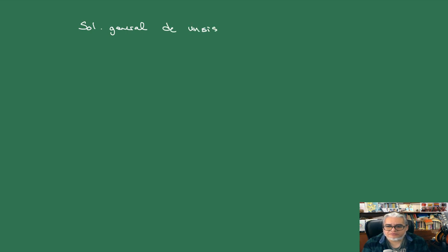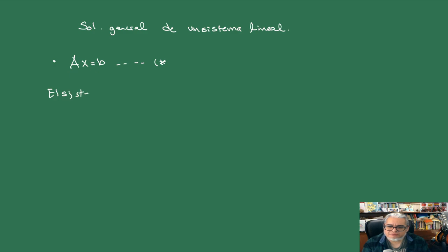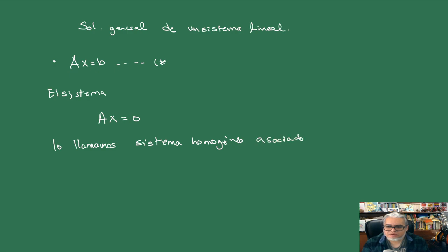Vamos a ver primero la solución general de un sistema lineal. Vamos a partir de que queremos analizar el sistema este, vamos a llamarle estrellita. El sistema homogéneo asociado a estrellita lo llamamos sistema homogéneo asociado.